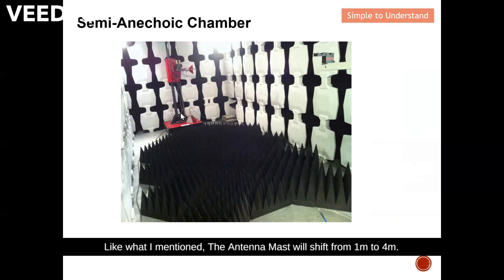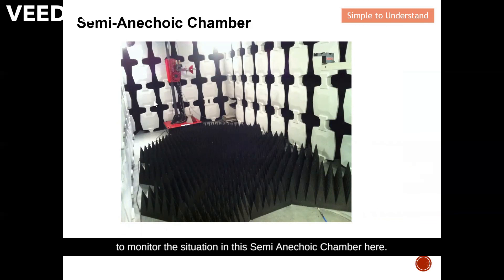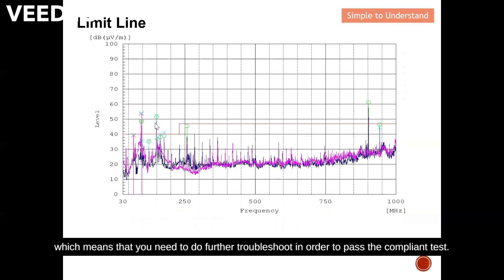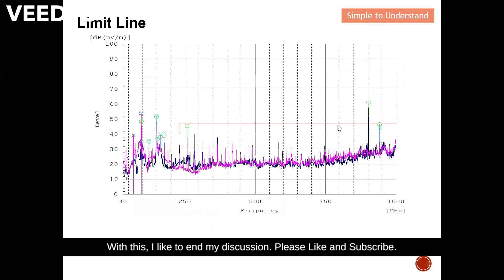This photo is taken from the turntable. You can see the antenna mast, which shifts from one meter to four meters. Here you can also see the camera used to monitor conditions inside the semi-anechoic chamber. This is the limit line for CISPR 22, shown in red. Any measured point that exceeds this limit line means further troubleshooting is required to pass the compliance test. To pass the EMC compliance test, all measured points must be below the limit line. Please like and subscribe — thank you so much.